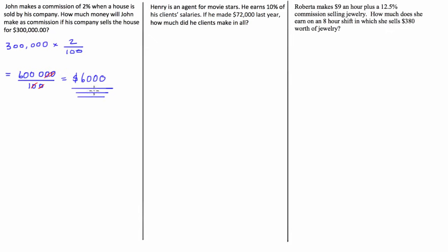It's good practice to express percentage commissions as fractions so you can work these out without a calculator. Now, the next one: Henry is an agent for movie stars. He earns 10% of his clients' salaries. If he made $72,000 last year, how much did his clients make in all? We're going to call the amount his clients made C dollars. So C times 10% equals $72,000.